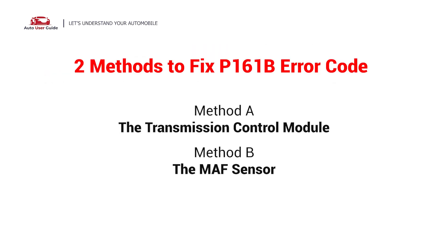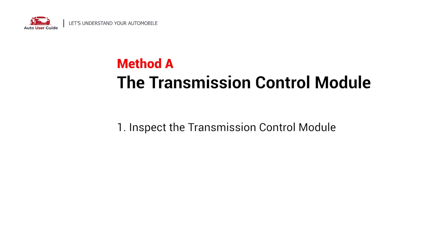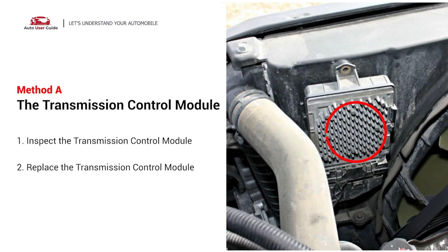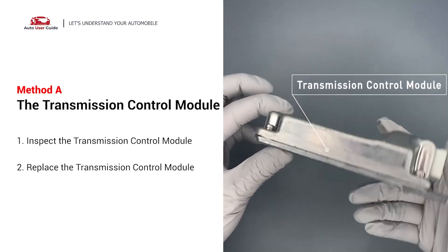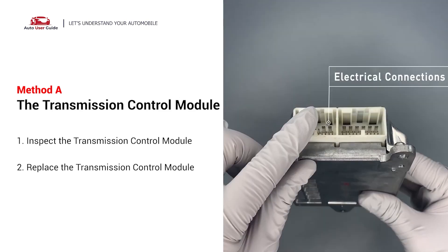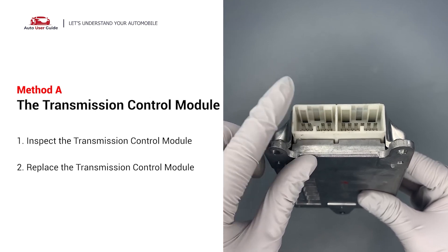Here are two simple DIY methods to fix the error code. Method A: the transmission control module. The TCM can often be found below the cover at the back of the transmission case, just below the engine control module. Visually check the TCM and its electrical connections for any damage. If damage is found, replace the transmission control module.